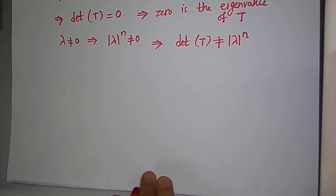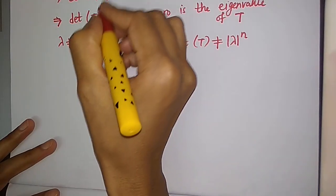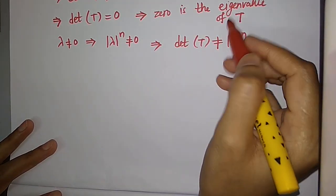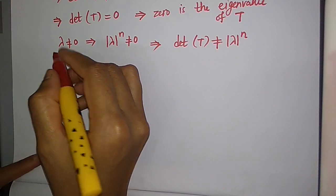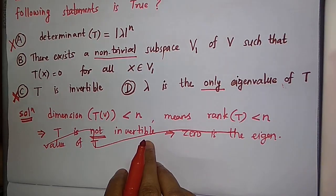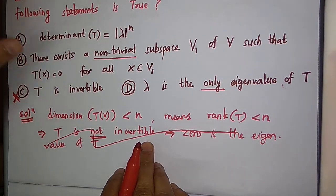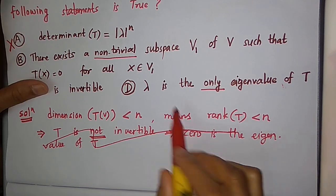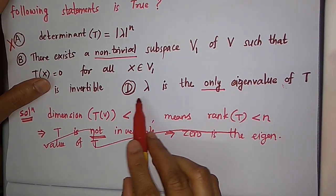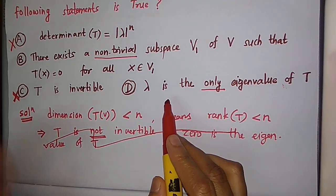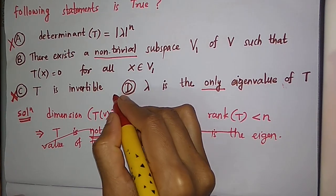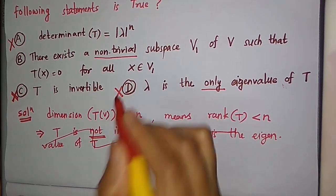From the above, 0 is an eigenvalue of T. So option D is also false, because 0 is also an eigenvalue of T, meaning lambda cannot be the only eigenvalue of T. So option D is false.